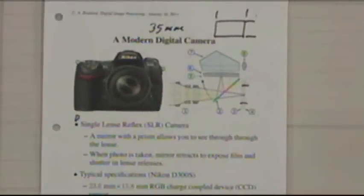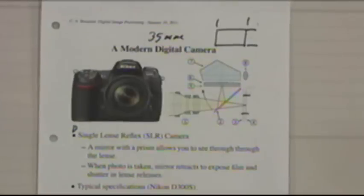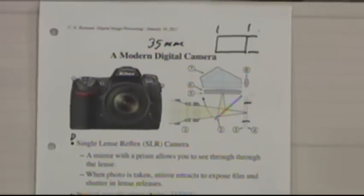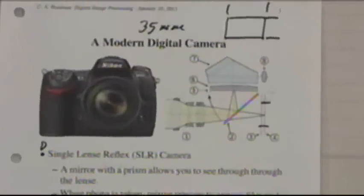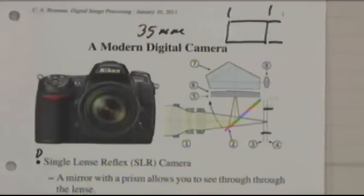The primary topic of this course is digital imaging. Images are often captured with optical imaging systems, particularly cameras. The mainstay of professional photographers is what they call the single-lens reflex camera. These days it's called the digital single-lens reflex camera, DSLR.